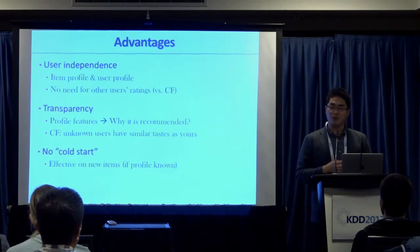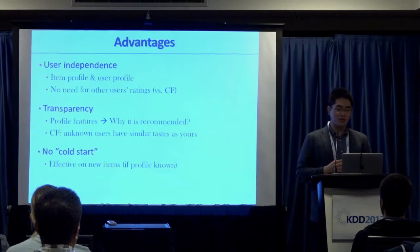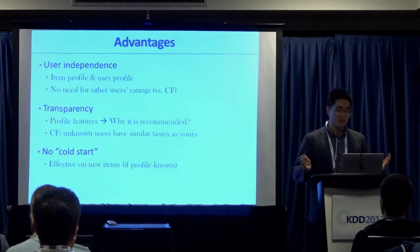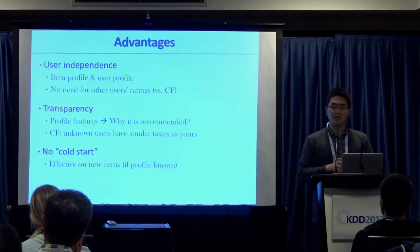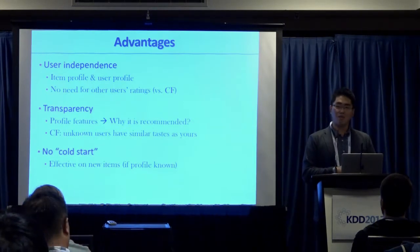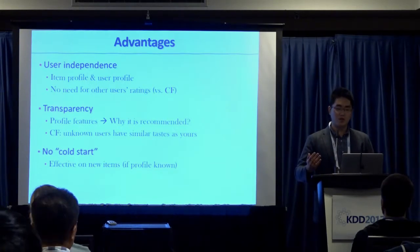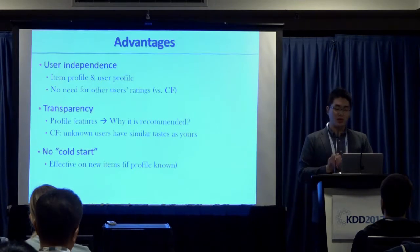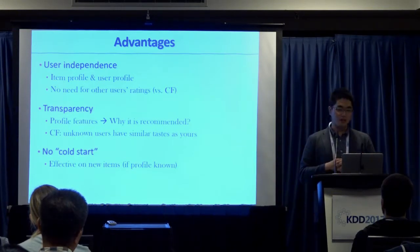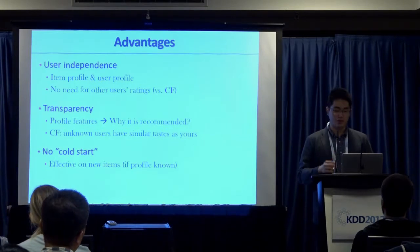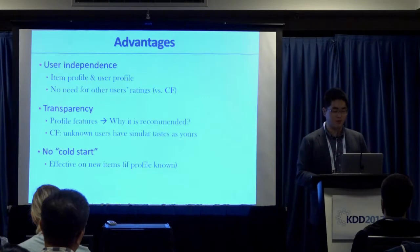The advantages of content-based recommendation: first, it doesn't need to care about any other users — as long as you can derive a profile for yourself and for all items, you don't need other users' history. Second, it's transparent because you know what the key features are and can explain why you recommend an item to a user. Third, there's no cold start problem as long as you have those profiles.